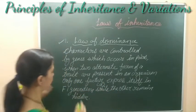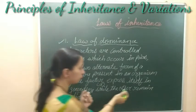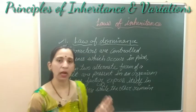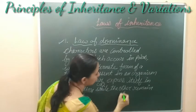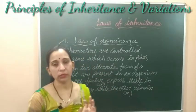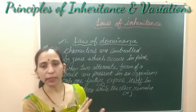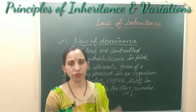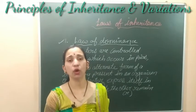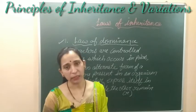In the F1 generation, the dominant factor will show itself, while the other factor will remain hidden — that is the recessive factor. In simple terms, two forms of a trait are present: one will be dominant and show its effect, known as the dominant allele, and the other will be the recessive allele, which does not show its effect.